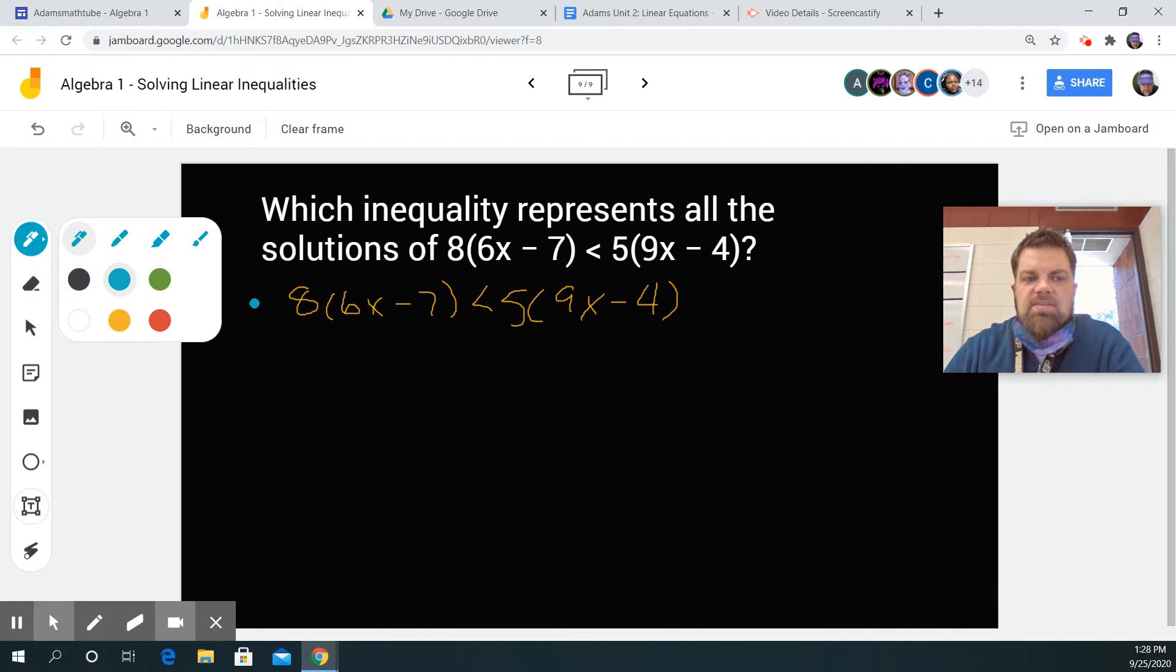What do I do next, guys? What do you think? I'm going to distribute. What's 8 times 6x? 48x. What's 8 times negative 7? Negative 56.